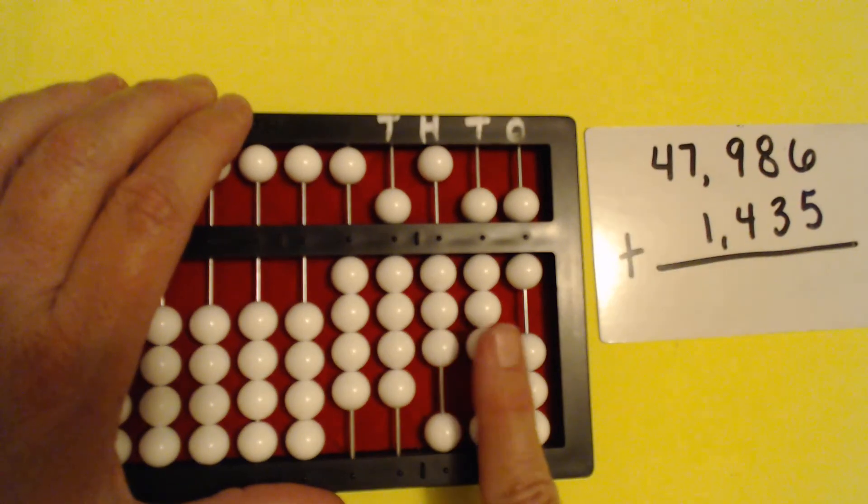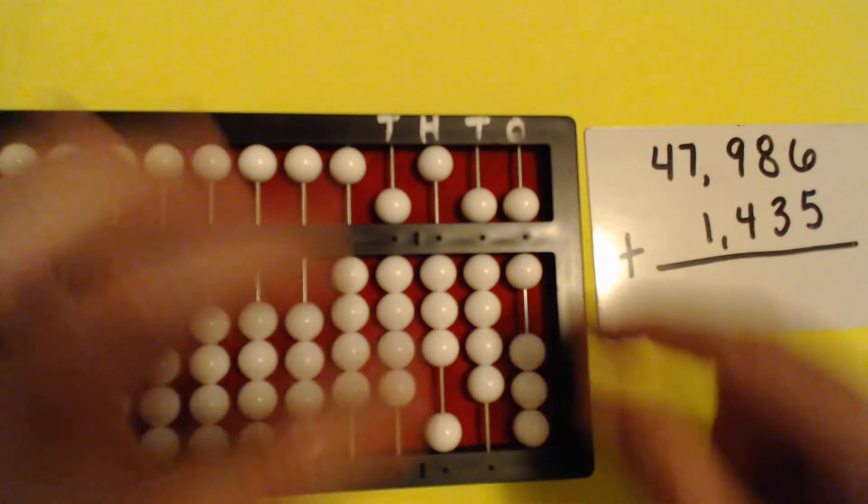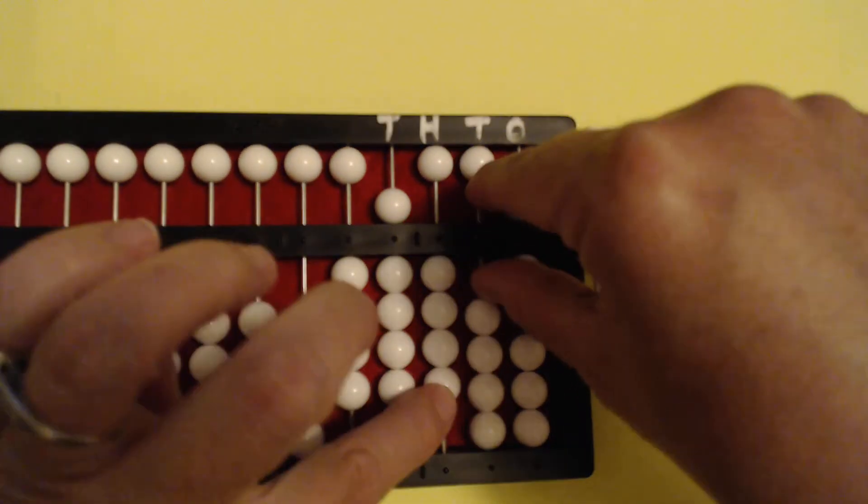Now we're going to set 30 in the tens column. One, we're out of beads. Let's make an exchange. Two, three.